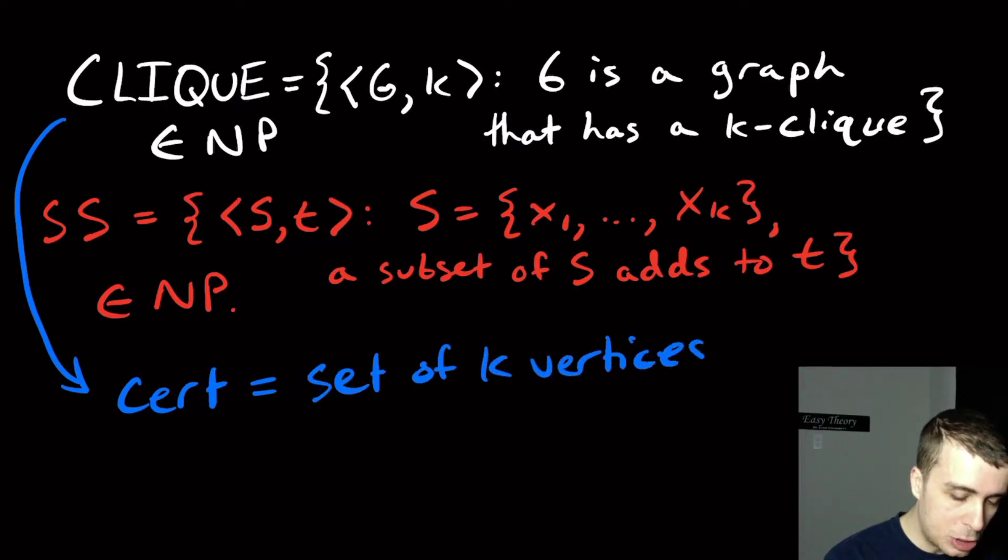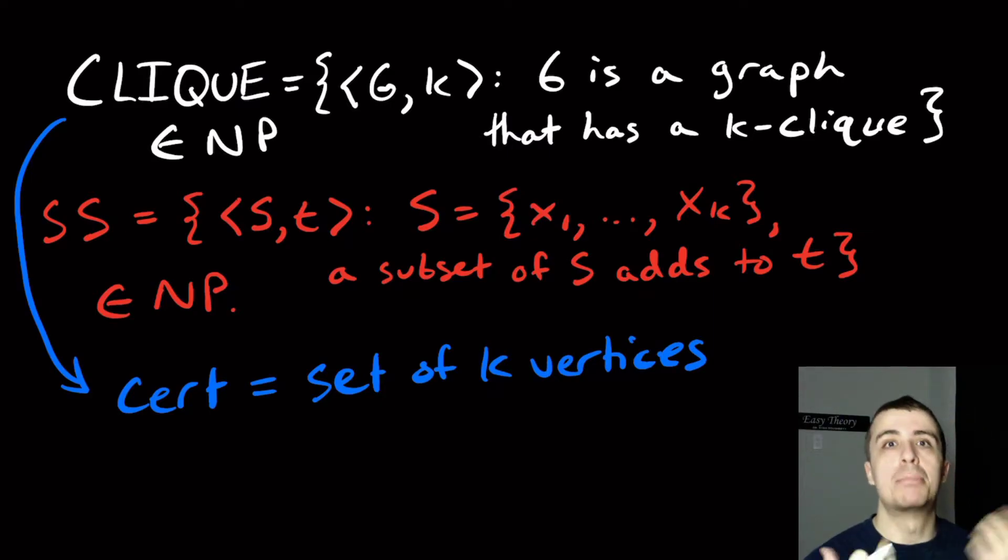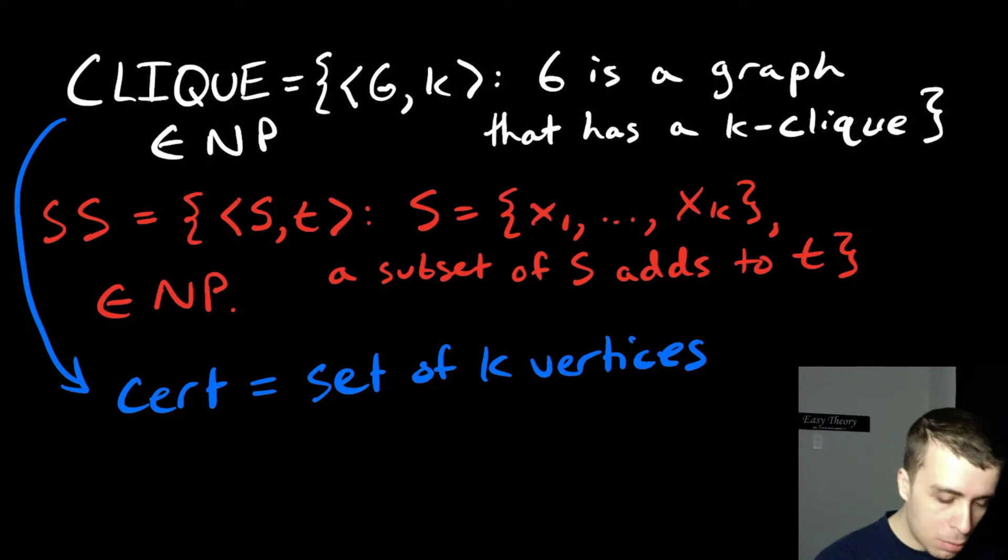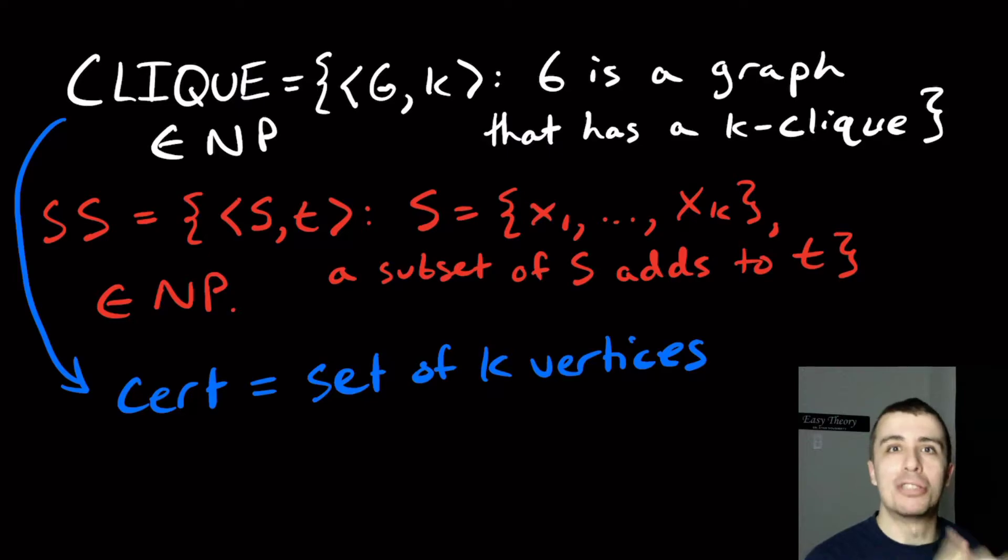And another thing that we should check is that the certificate is polynomial in the size of the original input. Well, k is at most the number of vertices, so it can be at most linear in the number of vertices. So it's certainly polynomial in size.